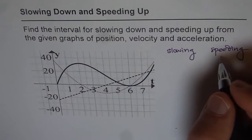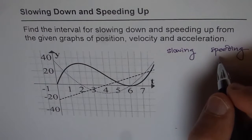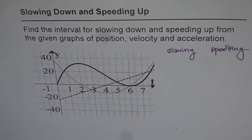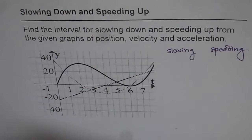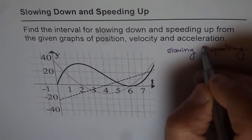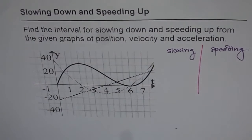If you are moving north and you are accelerating, that means you are speeding — both are in the same direction. Similarly, if you are moving south and you are decelerating, it is actually speeding up. So basically, you are speeding up when both velocity and acceleration are in the same direction — either both are positive or both are negative. That is the criteria by which we can figure out whether it is speeding or slowing down.